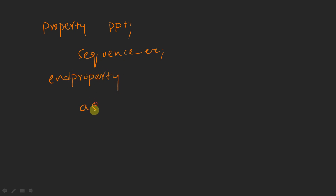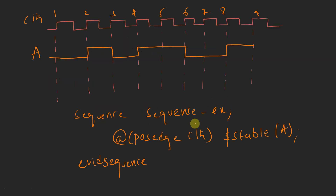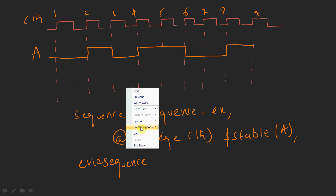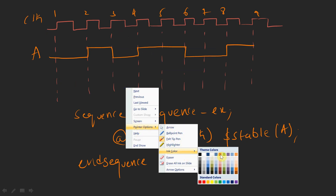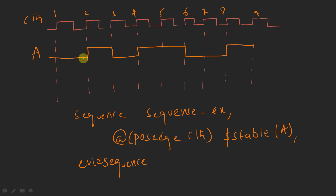Now we are going to assert this property: assert property ppt. Let's see where this particular assertion is going to get passed and where it is going to get failed. At the first clock edge, we don't know the previous value, so the assertion is going to get failed.